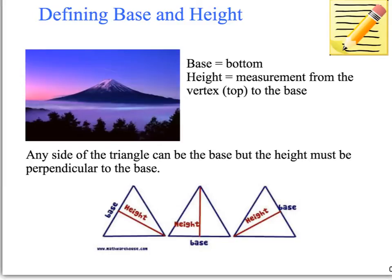If we look at the diagrams, any side of the triangle can be the base, but the height must be perpendicular. On the first triangle, the base is the left-hand side and the height goes from the base to the opposite vertex. One thing to look out for is the perpendicular symbol — a small square — showing that the height is at right angles to the base.